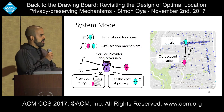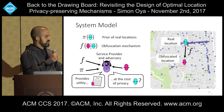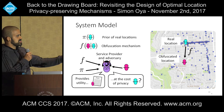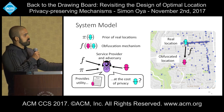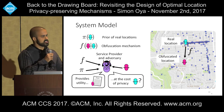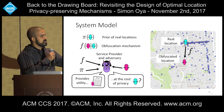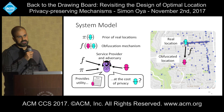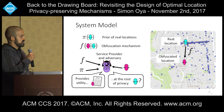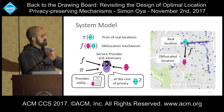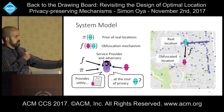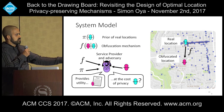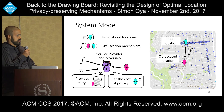First, the system model. We have a map with points of interest, and there is a prior over real locations that tells you the probability that a user is at each of the points of interest in the map. The obfuscation mechanism can be seen as a probability density function that gives you the probability of reporting a given output location given a particular input location.